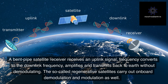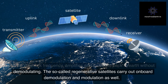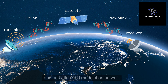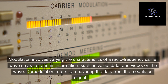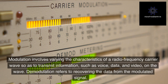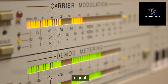The so-called regenerative satellites carry out on-board demodulation and modulation as well. Modulation involves varying the characteristics of a radio frequency carrier wave so as to transmit information, such as voice, data, and video, on the wave. Demodulation refers to recovering the data from the modulated signal.